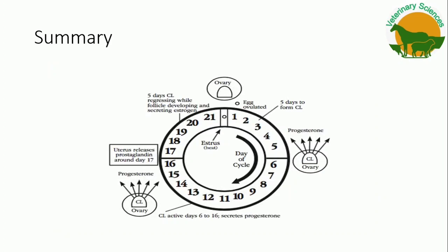Let us now quickly see the summary of the estrus cycle. Assuming the day of ovulation as day zero: the corpus luteum (CL) releases P4 at its peak after five days of formation, and this peak period is known as the diestrus stage. This P4 block is removed by PGF2 alpha released by the uterus or endometrium. Then new follicular waves start and estradiol attains its peak. This is how the cycle repeats after 21 days if AI is not done.